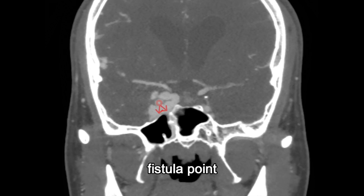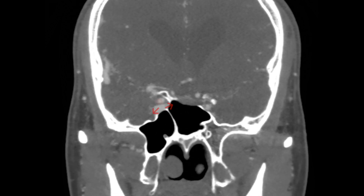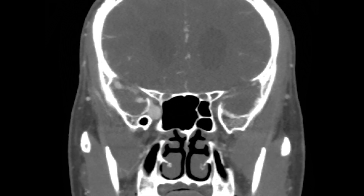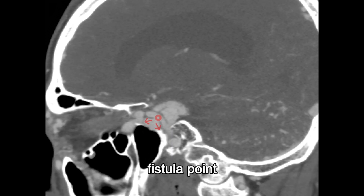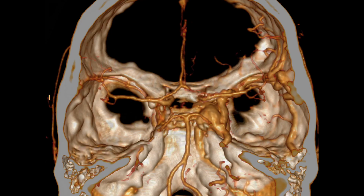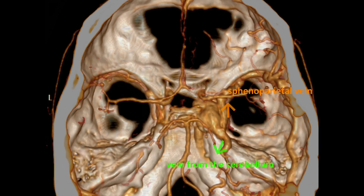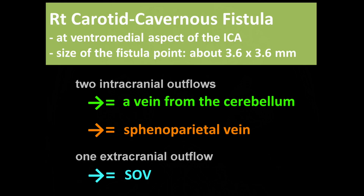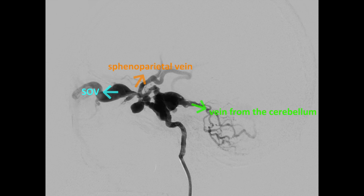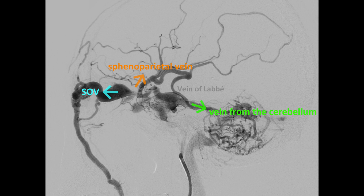Careful evaluation is the key to recognize the fistula point. There were two retrocortical flows. Three outflow channels were: a vein from the cerebellum, sphenoparietal vein, and superior ophthalmic vein.